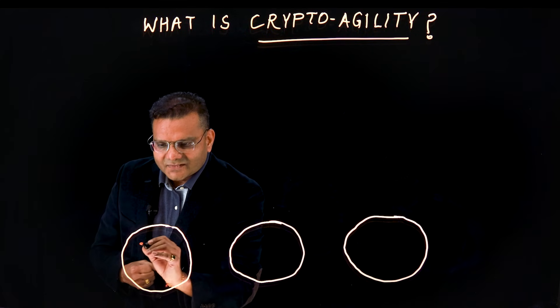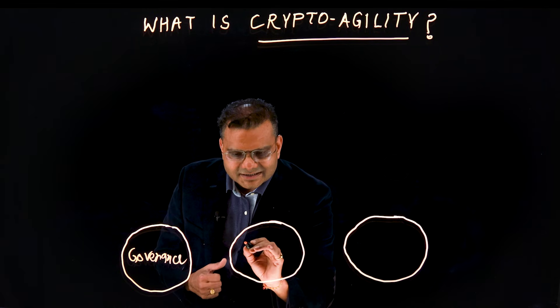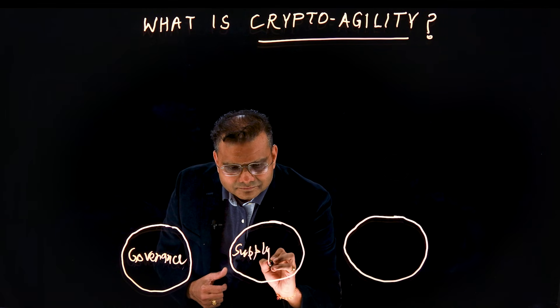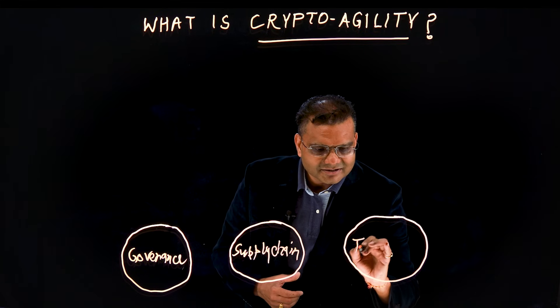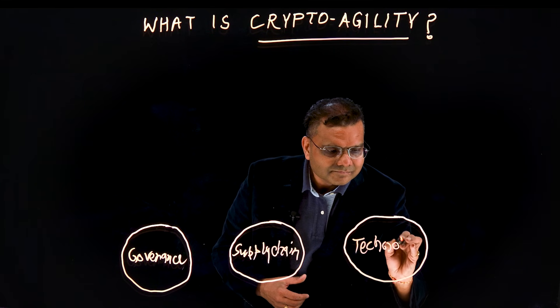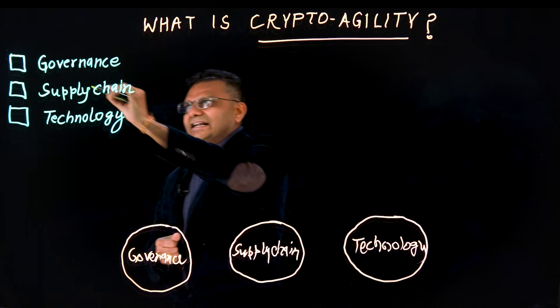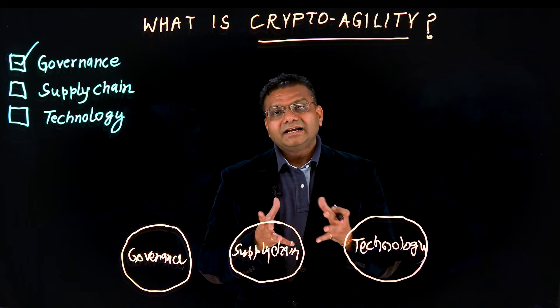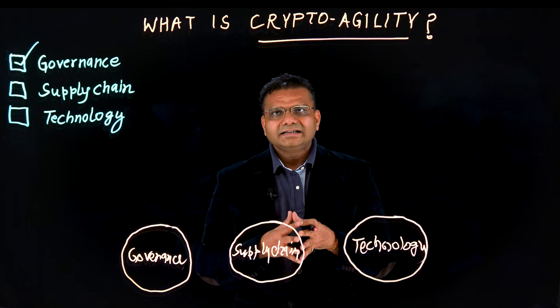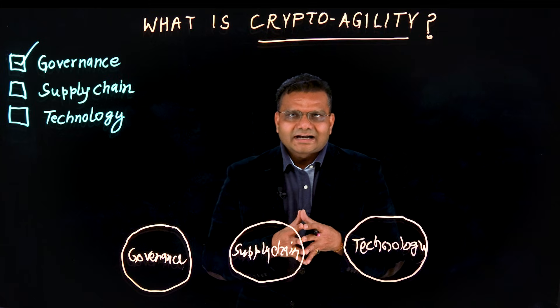The first component is governance. The second is supply chain, and the third is technology. Starting with governance: it is an ability for an organization to understand the standards and policies related to organizational cryptography.